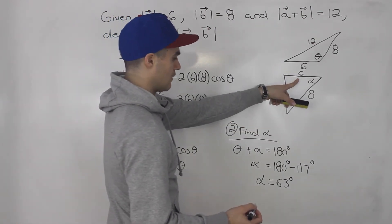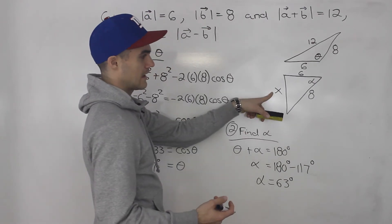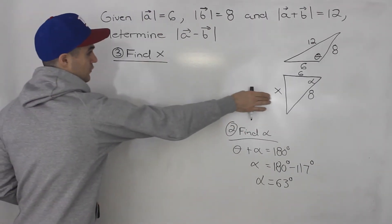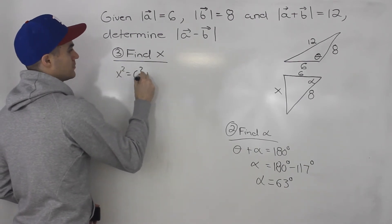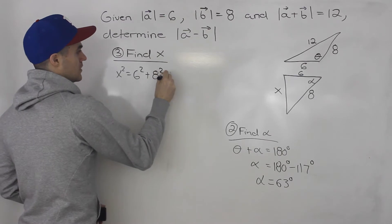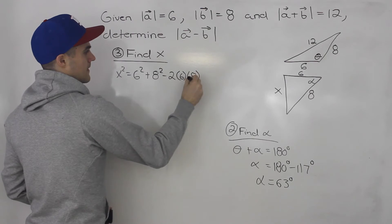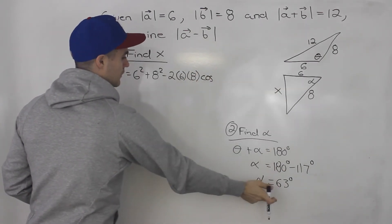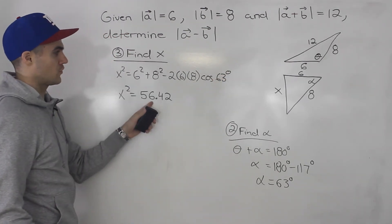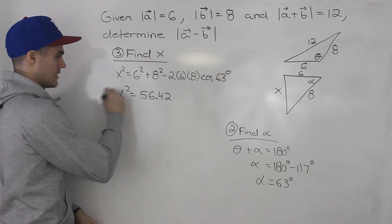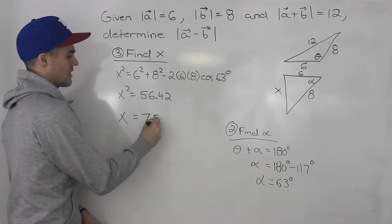For step three, we can now solve for x using the cosine law. So x squared equals 6 squared plus 8 squared minus 2 times 6 times 8 times cos of 63 degrees. You end up getting 56.42 on the right side, and when you square root both sides to get x by itself, you end up getting 7.51.